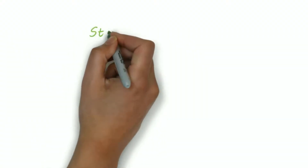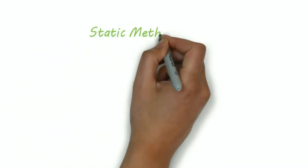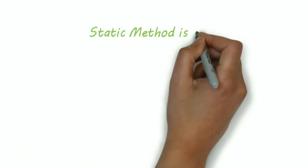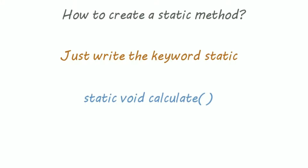The concept of static methods is very easy. To create a static method, simply write the static keyword in front of the method declaration. For example: static void calculate.